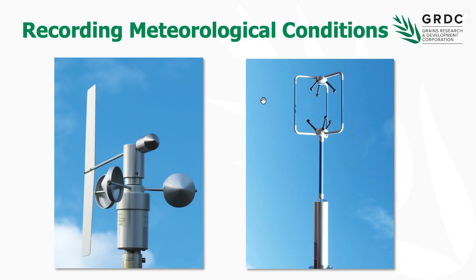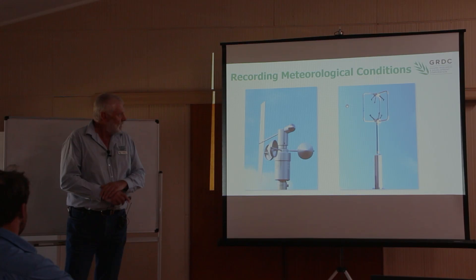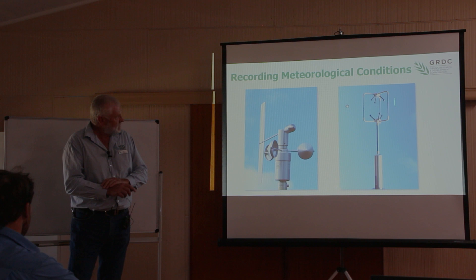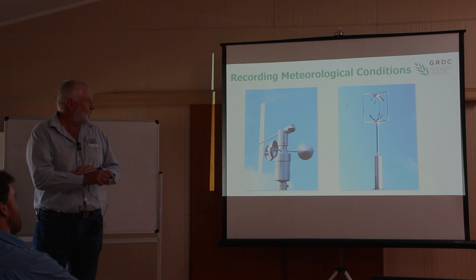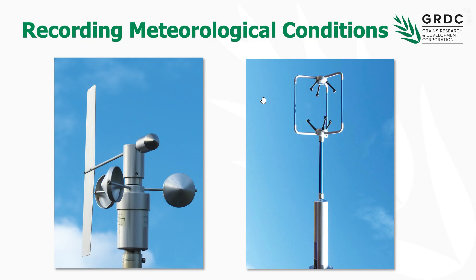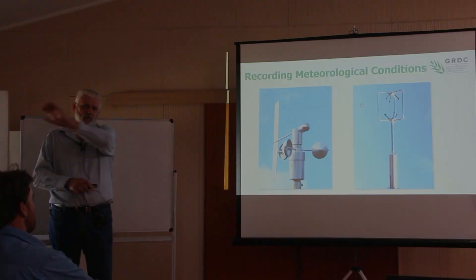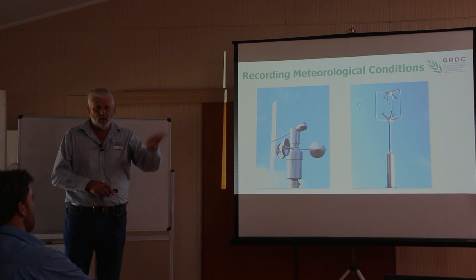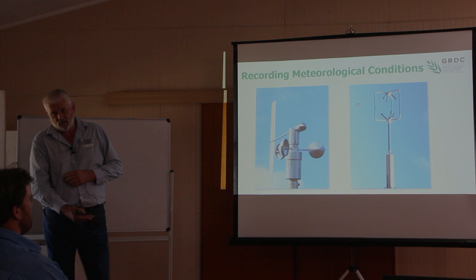You'd all be familiar with the traditional cup and vane wind measuring device. This Campbell Scientific unit is the backbone of WAND - it's a 3D sonic anemometer. There's one at 10 metres and a 2D one at 2 metres taking these measurements. What that enables the system to do, rather than the traditional which just gives us a horizontal wind speed, is give us wind speeds horizontally, vertically - basically 3D within that sphere. So between that 2 and 10 metre space, we're measuring turbulence in all directions and giving us a number.